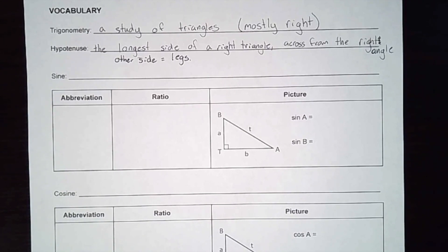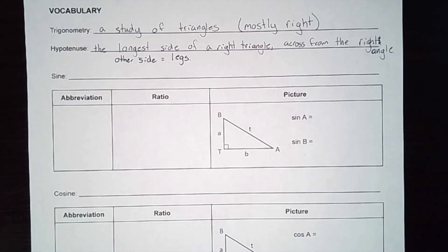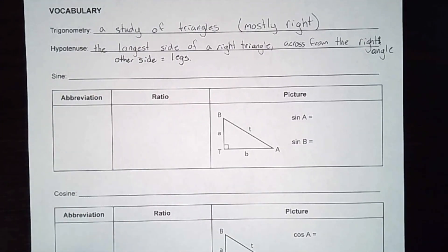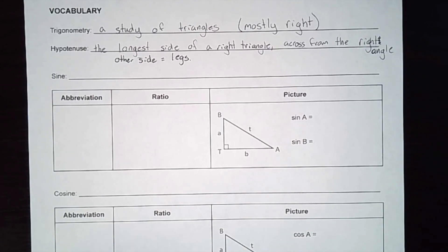Let's get started talking about our trigonometric ratios. There are three of them: tangent, cosine, and sine. When we say sine, cosine, and tangent, we are talking about the ratio of the sides of a triangle. When we say ratio, we're talking about fractions — sometimes we write them as decimals but for the most part we stick to fractions.